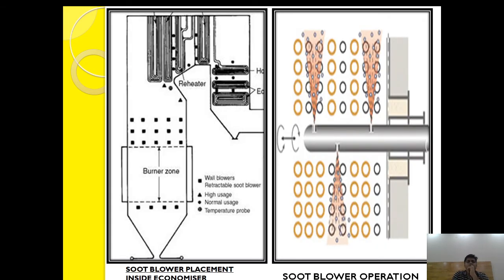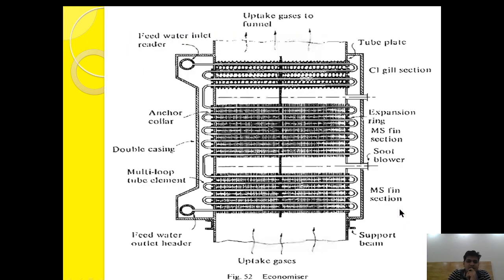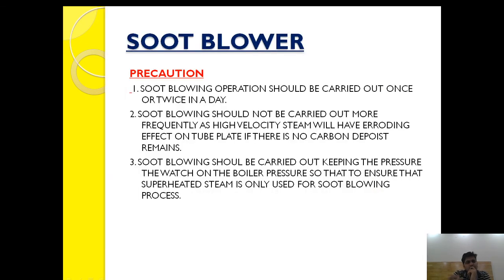This diagram shows where the soot blower is placed and how the soot blowing operation is carried out. When the retractable nozzle comes out, high velocity steam is injected into this space and performs the cleaning action. As you can see in the diagram, these are the placement positions of the soot blowers — one and two — and high velocity steam is injected through these points.